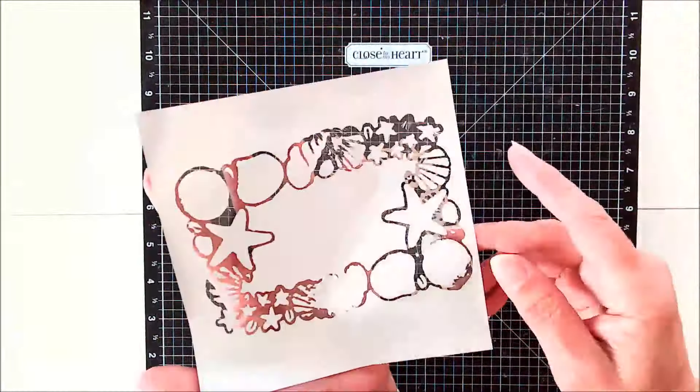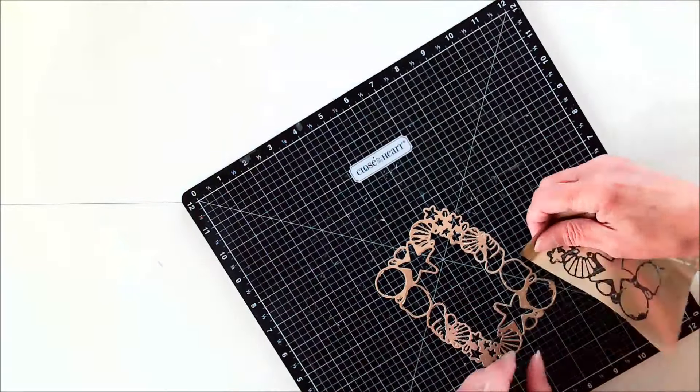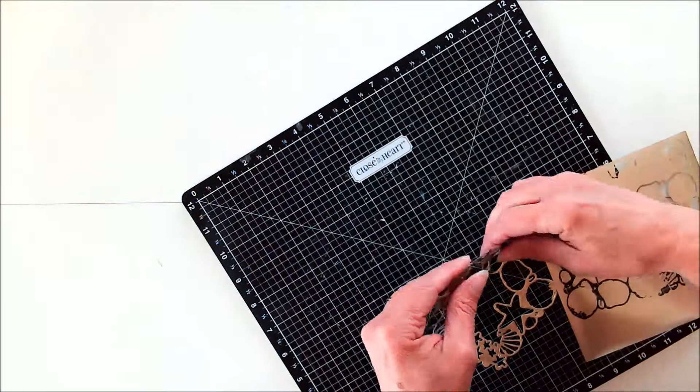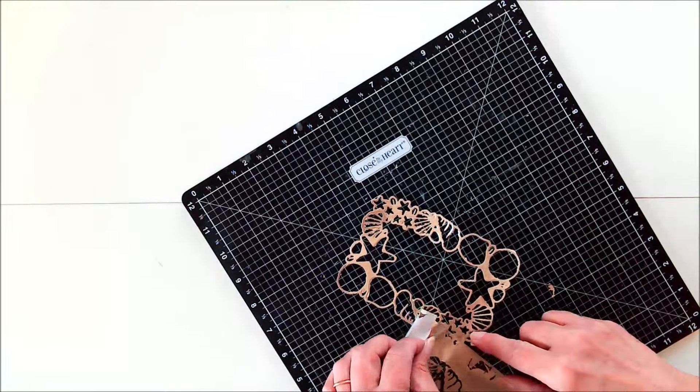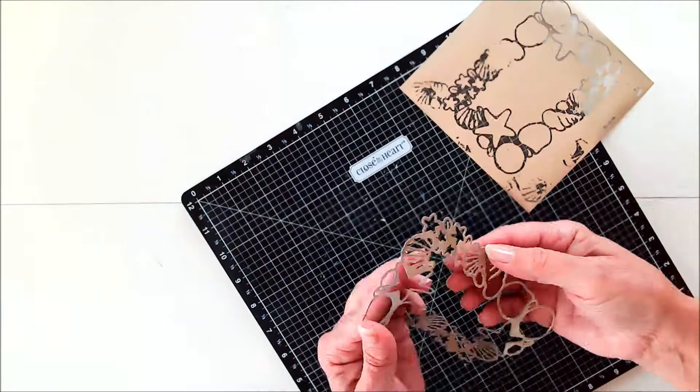And if you see any places that were missed, just go back with the foil and rub it over those areas. It is so easy to foil anything that you want without a machine, and you can do this with more than just cards.